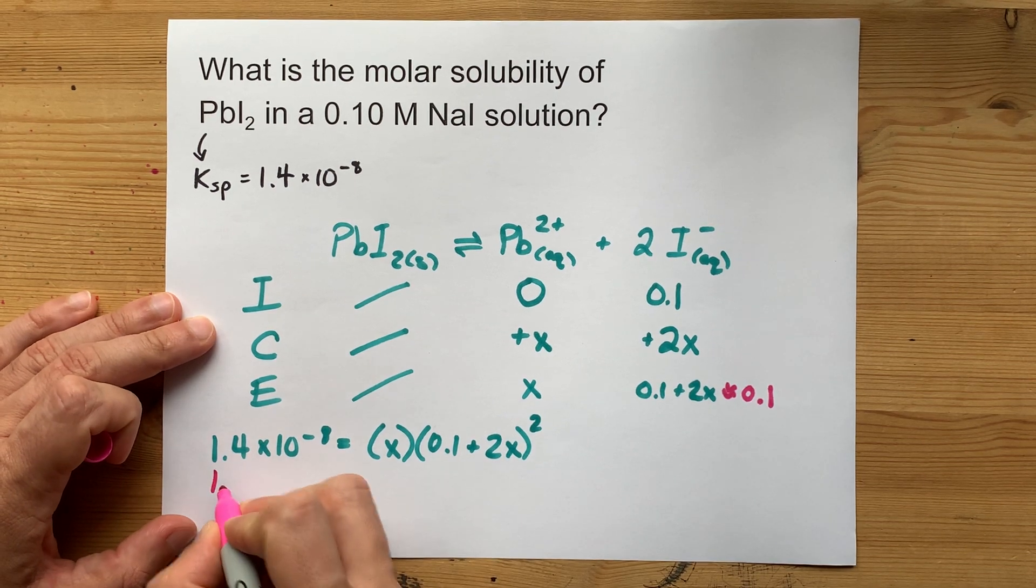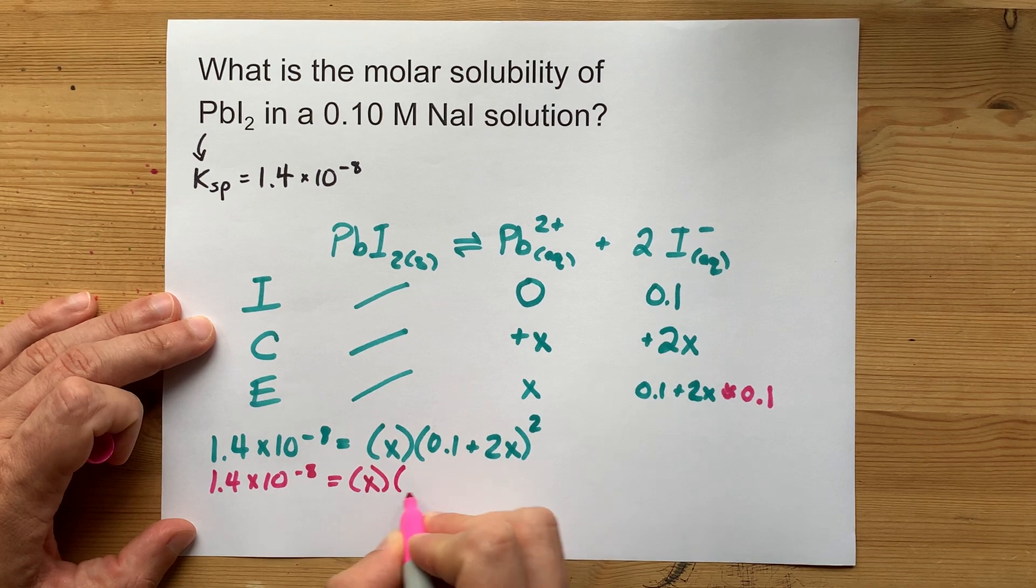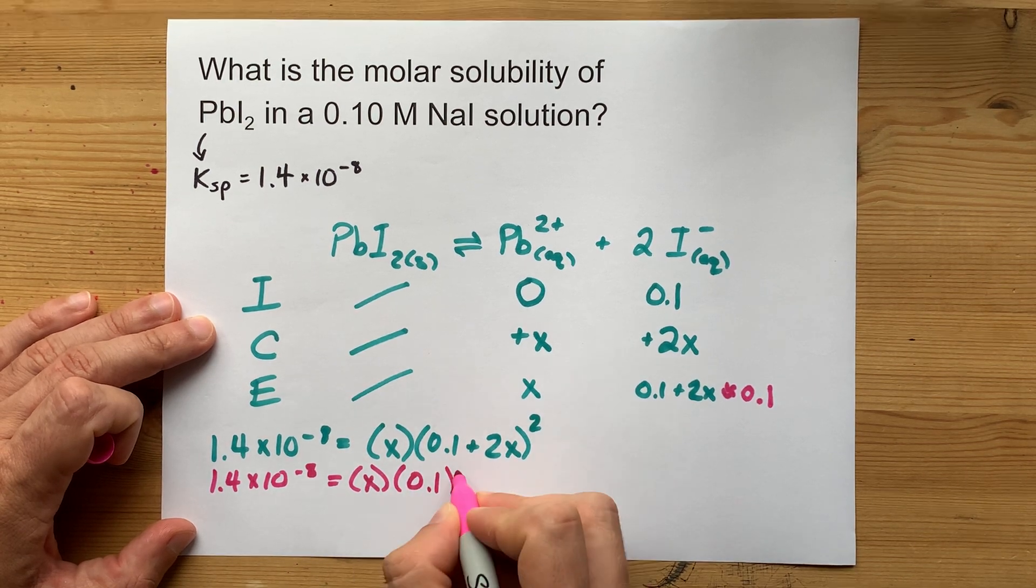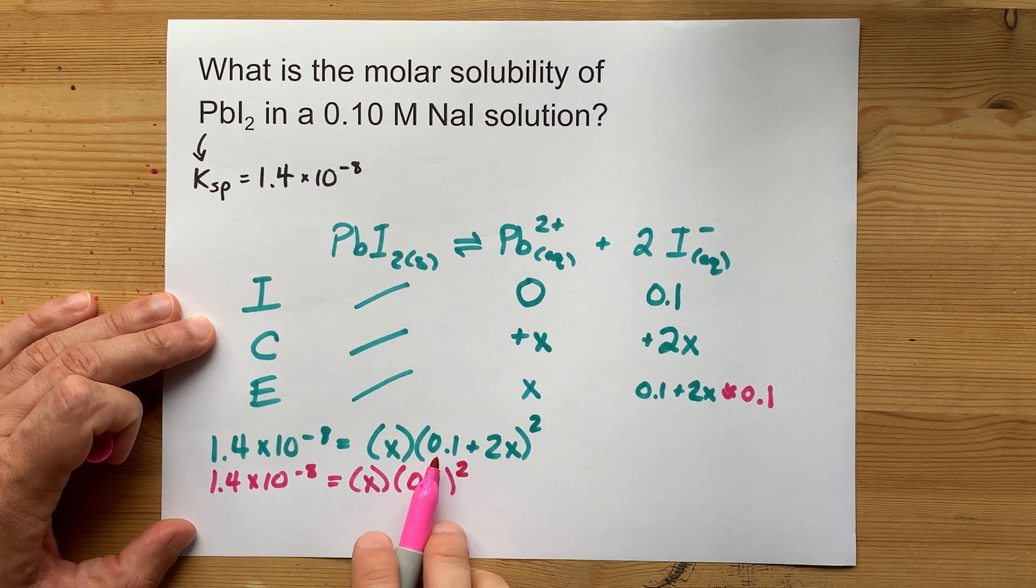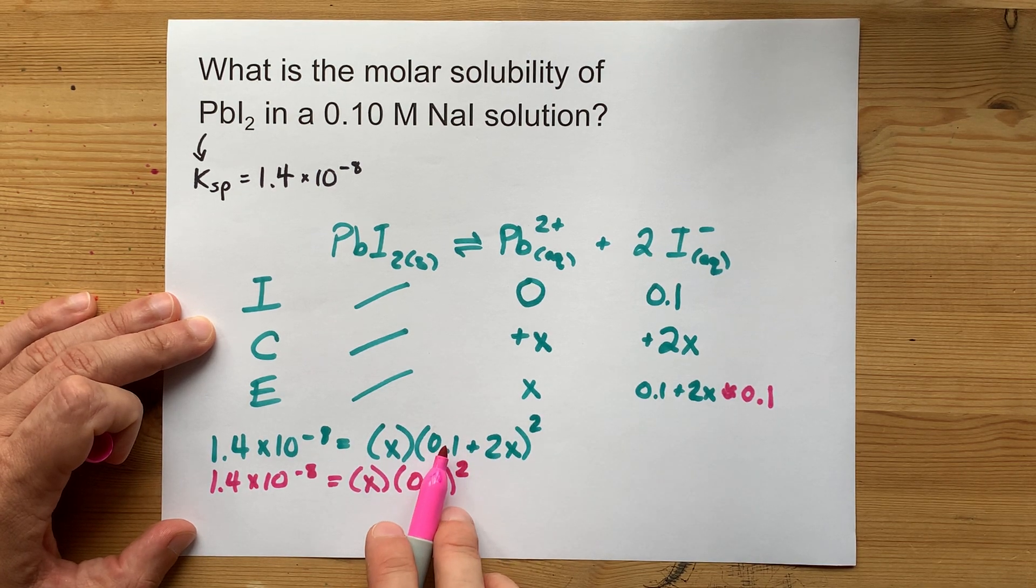So what that means is we have 1.4 times 10 to the negative 8 equals X times about 0.1 squared. Note, the plus 2X is insignificant compared to the 0.1, so we can just leave it off.